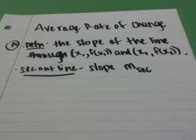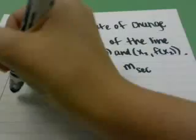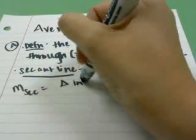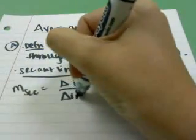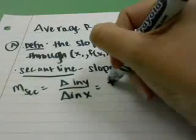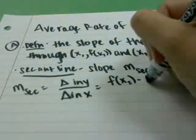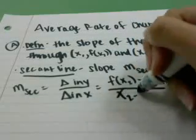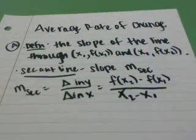The secant line is the line that goes along that that gives us the slope of any two points. The formula for the secant is the change in y over the change in x, or f of x2 minus f of x1 over x2 minus x1. And that's our slope. Let's look at an example.